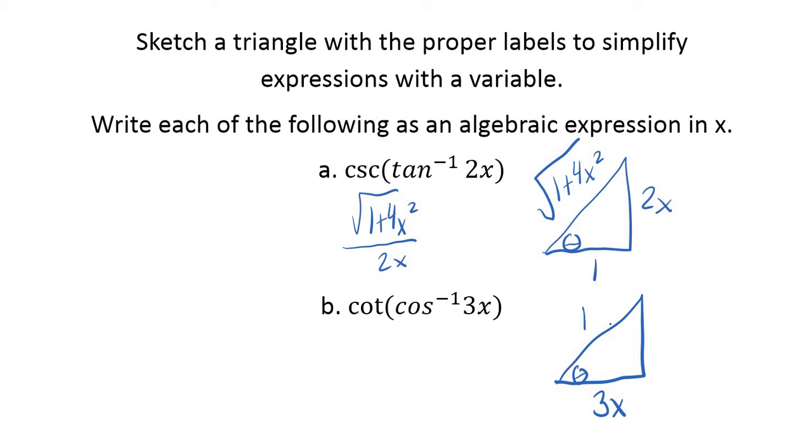So we're going to do 3x over 1. And then what would this side be? It would be 1 minus that squared, square root of that. So we've got square root of 1 minus 9x squared. Because this squared would be 9x squared, right?